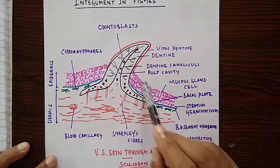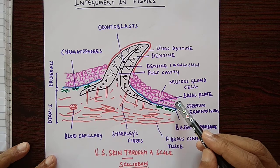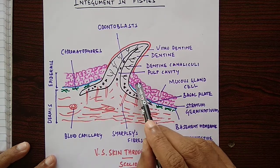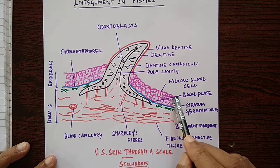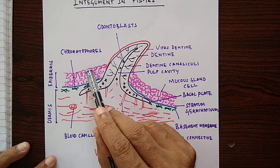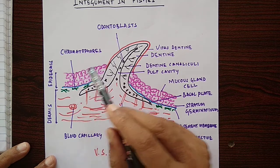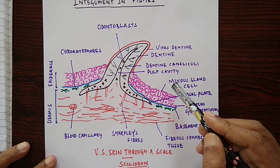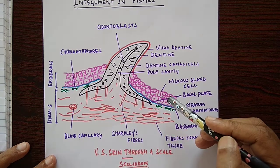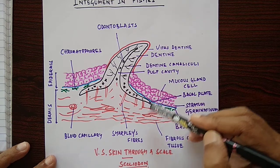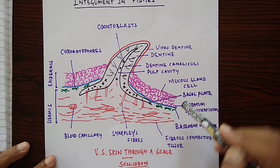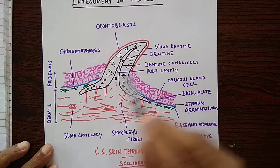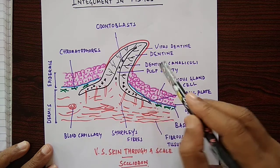The uppermost layer of fish epidermis does not have dead cells — these are living cells that have nuclei. This layer may be rubbed off because of the fish swimming through water, but new cells are replaced from the lower layers, coming from the stratum germinativum.